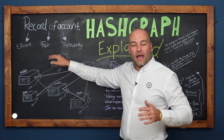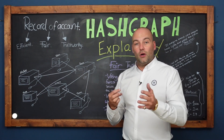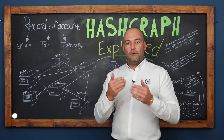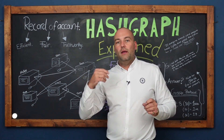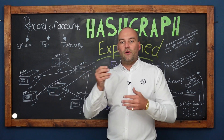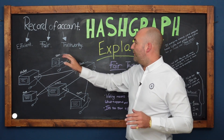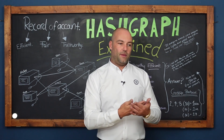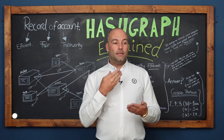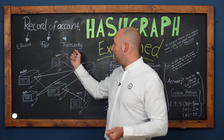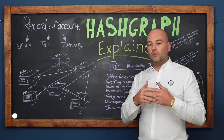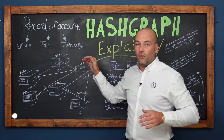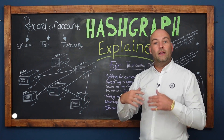You also want it to be fair. Unlike Bitcoin, for example, which is very unfair — it punishes the poor and rewards the rich. The more powerful your computer, the more chance you have of putting information on the blockchain. And you want it to be trustworthy, so you know that if you look back at the information it's correct, recorded efficiently and fairly, and it can't be hacked, broken into, or manipulated. Those are the three things we're aiming for: efficient, fair, and trustworthy.